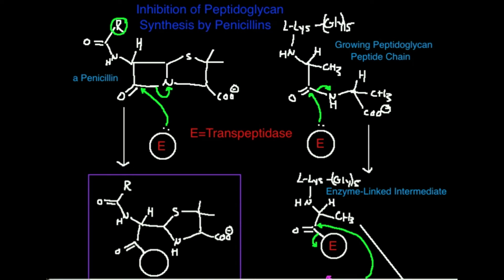So how does penicillin actually kill bacteria? What penicillin does is it targets an enzyme in peptidoglycan synthesis and inhibits it permanently. That enzyme is known as transpeptidase.